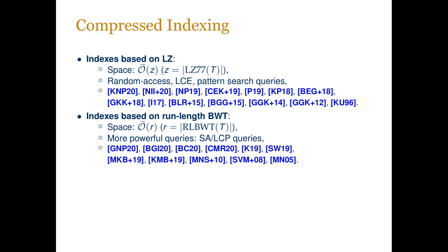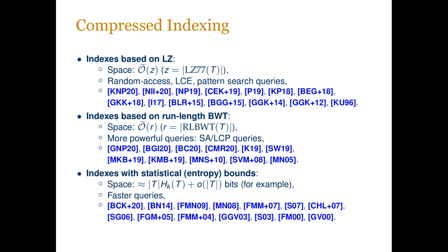BWT-based indexes are more powerful than LZ indexes since they can efficiently compute an arbitrary value from the suffix array or the LCP array. Lastly, there are indexes that achieve entropy bounds — the example space usage is the length of text times the k-th order entropy of T plus a term that is sublinear in the text length. These indexes are even more powerful than the BWT-based indexes.